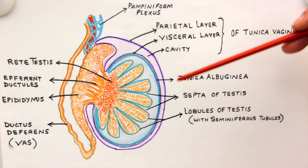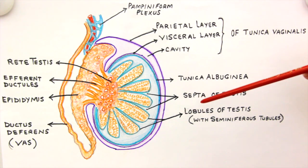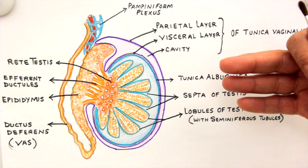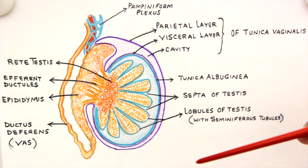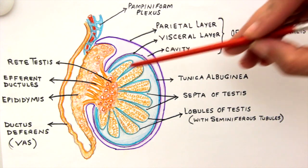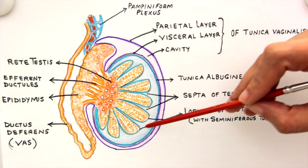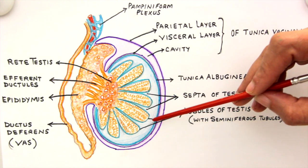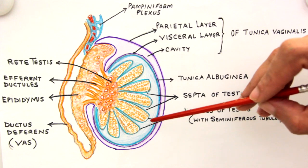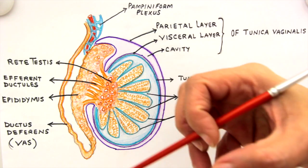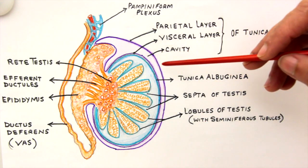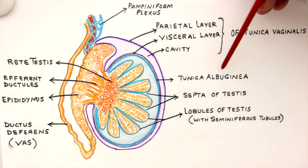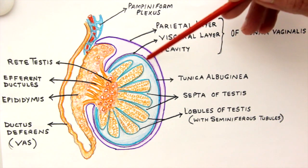Here in front of us there is an illustration showing the inside of a testis. All the components are visible in this illustration. The testis is surrounded or covered by a very tough fibrous capsule which is tightly adherent to the substance of the testis, known as tunica albuginea — 'albus' means white, so it's a white-colored capsule.